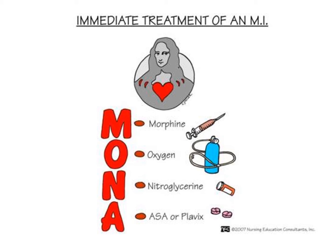The immediate treatment for an acute MI includes four drugs remembered by the acronym MONA, though this does not indicate the order. M stands for morphine, O for oxygen, N for nitroglycerin, and A for aspirin—although another antiplatelet medication such as Plavix could also be used.